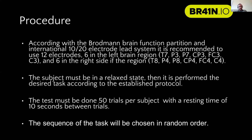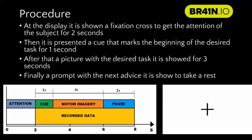The sequence of cues is chosen in random order to eliminate any bias resulting from training. The protocol can be developed within a day: the subject will receive a cue, perform motor imagery, and then have a pause before the next trial.